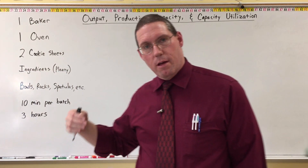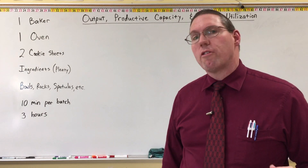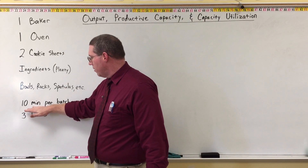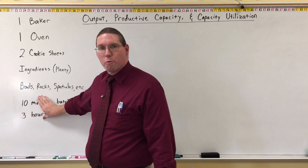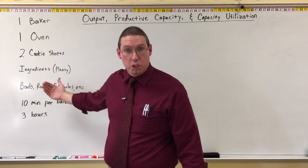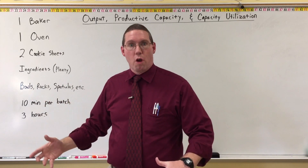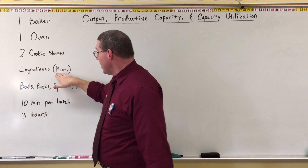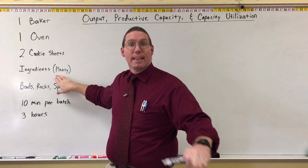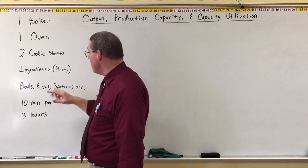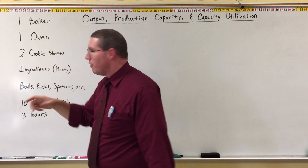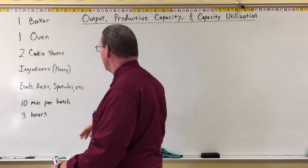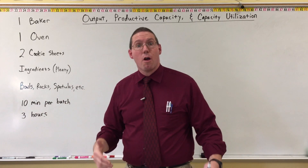I want to make this an analogy pertaining to economics and talk about resources. We have here a whole bunch of resources. The time and the ten minutes per batch are parameters to the situation — limitations on how we can use our resources. The actual resources are: the baker, that is labor; the ingredients, that's our land and natural resources; and the bowls, racks, spatulas, cookie sheets, and the oven — those are all capital. So we have land, labor, and capital all being brought together so that we can produce cookies. And the cookies are the product.